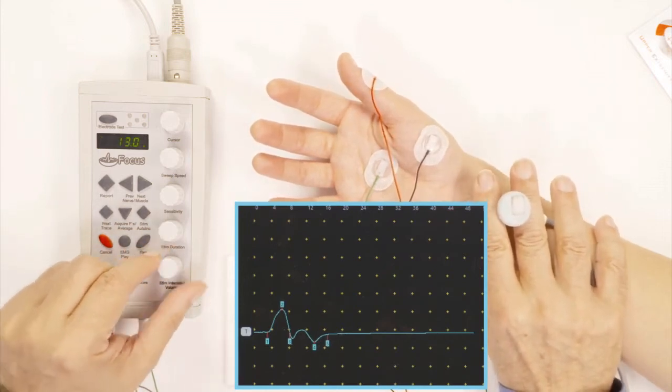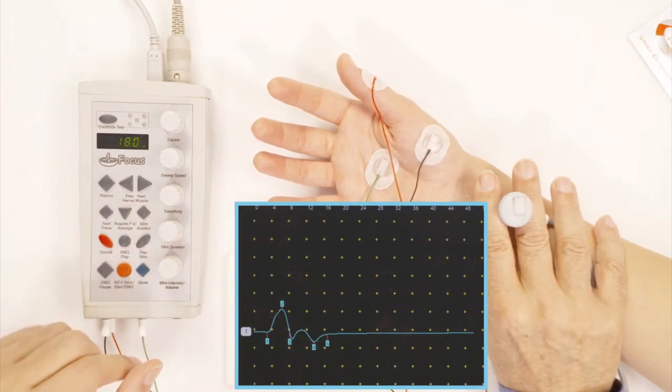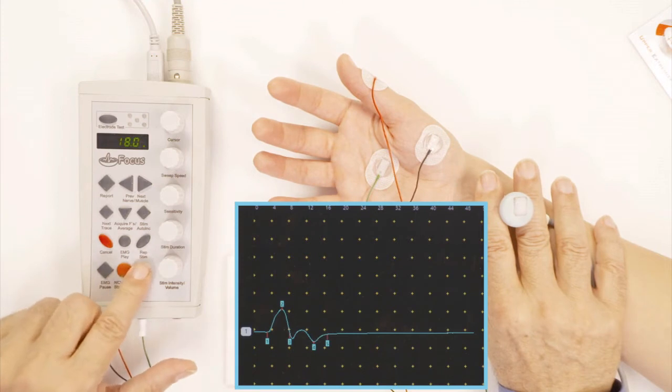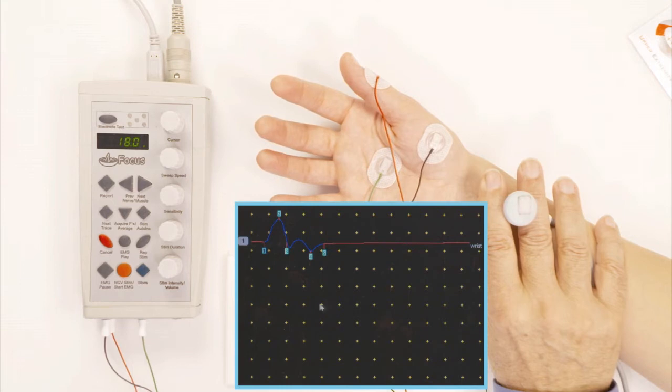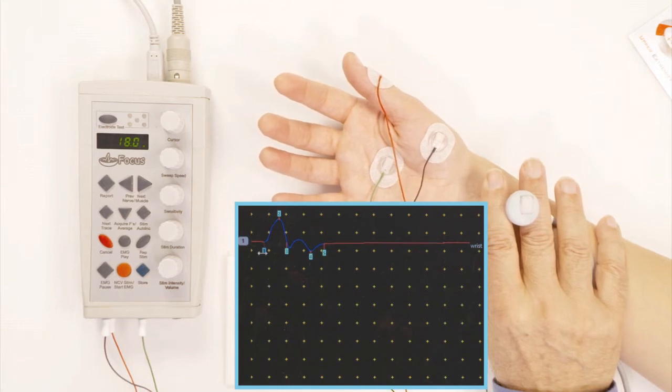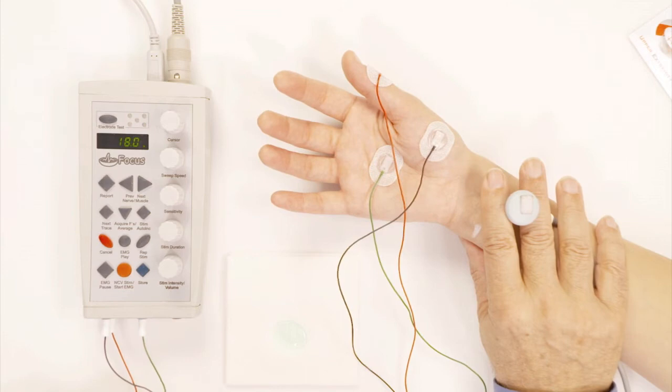And that's a good response, so I'm going to stop right there, and I'm going to accept it. And you see here, we see how the motor response looks like, and the markers were put automatically. This is the beginning, this is the peak, and this is the end of the motor response, and now I'm done with the median motor response.